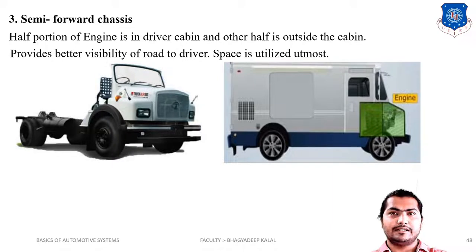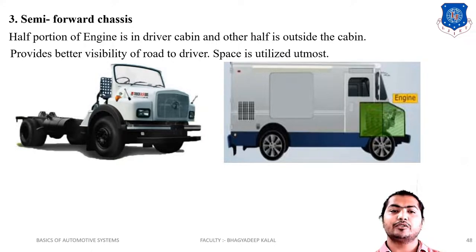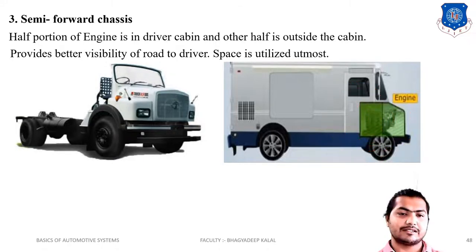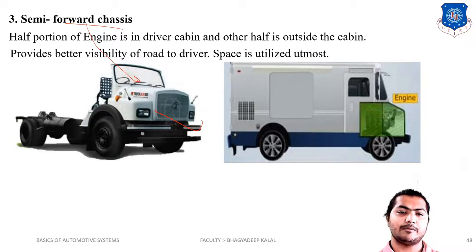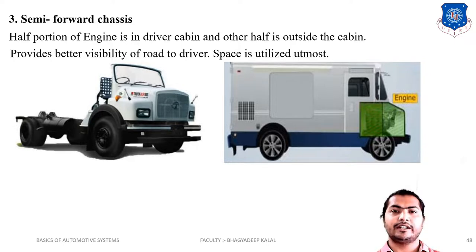Next is the semi-forward chassis. In semi-forward chassis, half the portion of the engine is inside the driver's cabin and the other half portion is outside the driver's cabin. This provides better visibility of the road to the driver and space utilization is improved. Weight balance is also very good here. Tata Motors vehicles are examples of the semi-forward chassis — half engine below the driver's cabin and half in front. So these are the three types of chassis: conventional, fully forward, and semi-forward chassis.